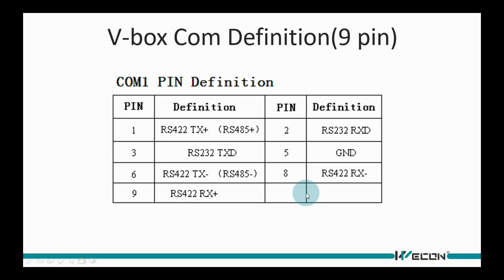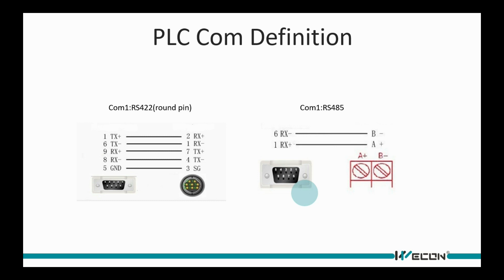This picture shows the VBOX COM port definition. It supports RS485, RS422, and RS232 connection. This is the Wekin PLC COM 1 port definition — the round connector is RS422, and the terminal connector is RS485.